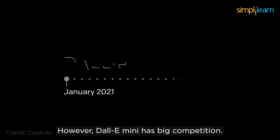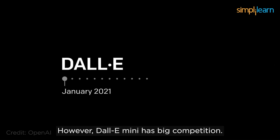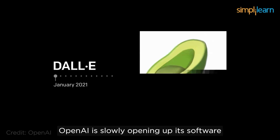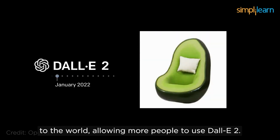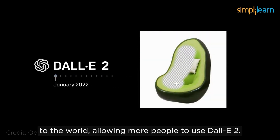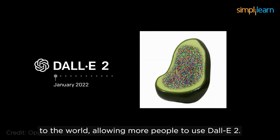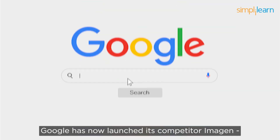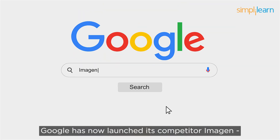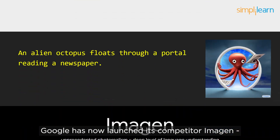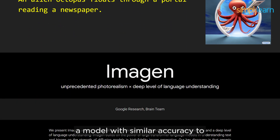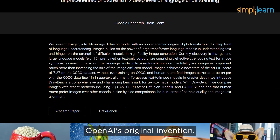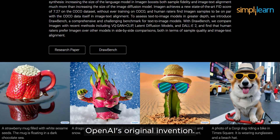DALL-E Mini has big competition. OpenAI is slowly opening up its software to the world, allowing more people to use DALL-E 2. Google has now launched its competitor Imagen, a model with similar accuracy to OpenAI's original invention.